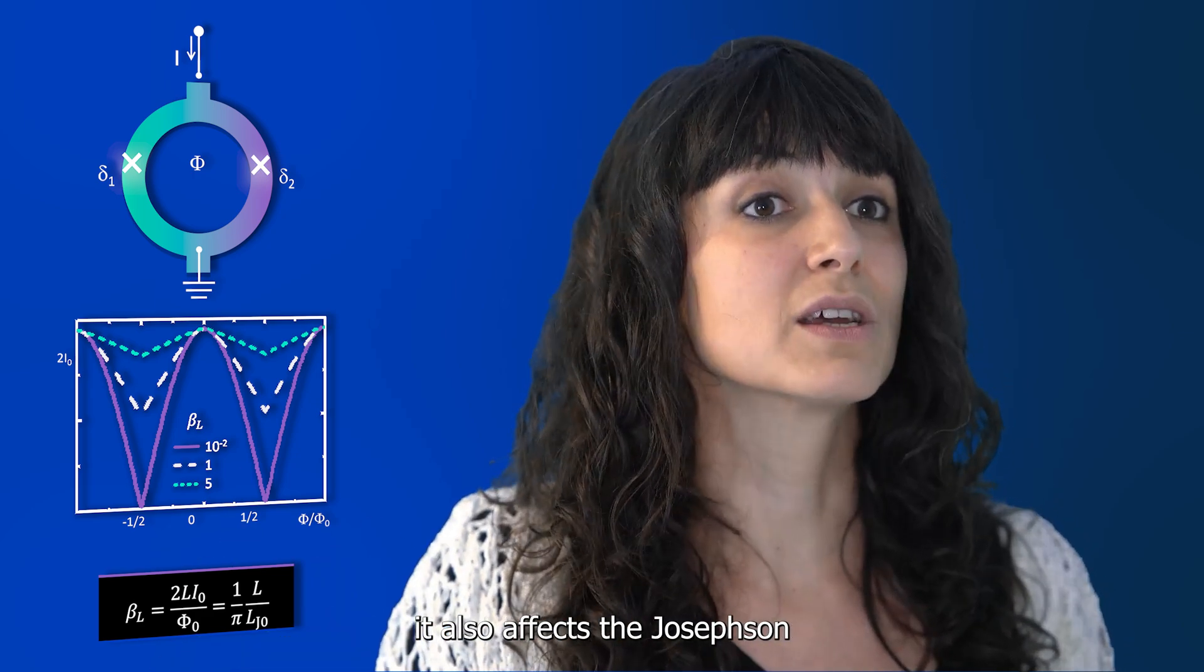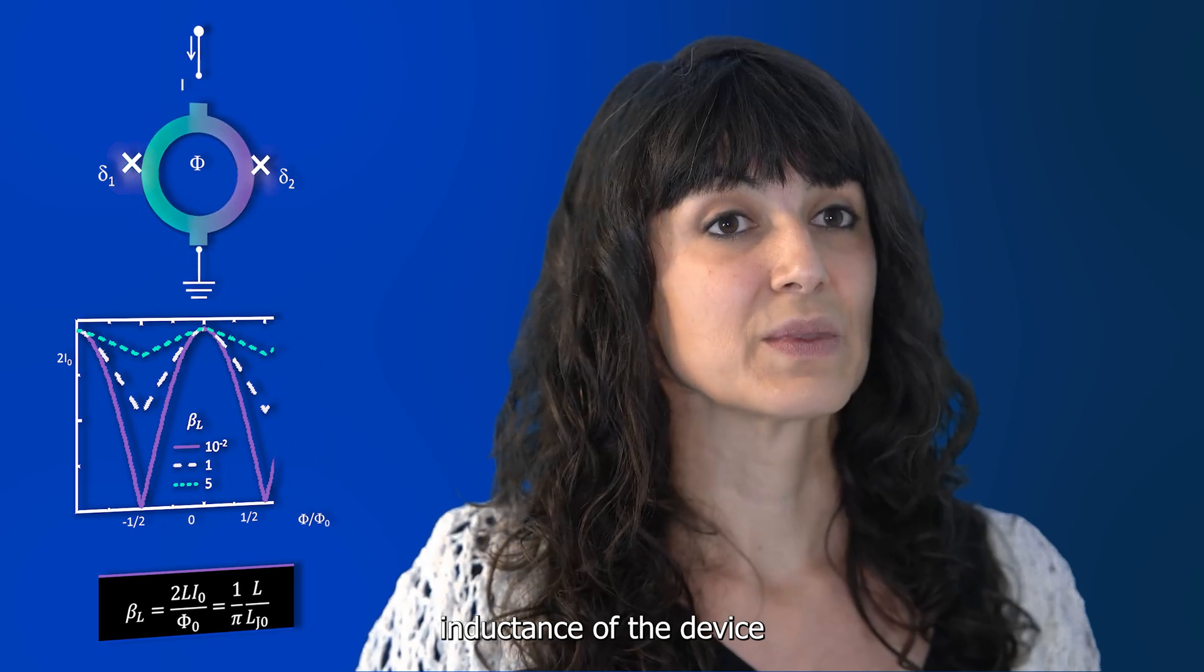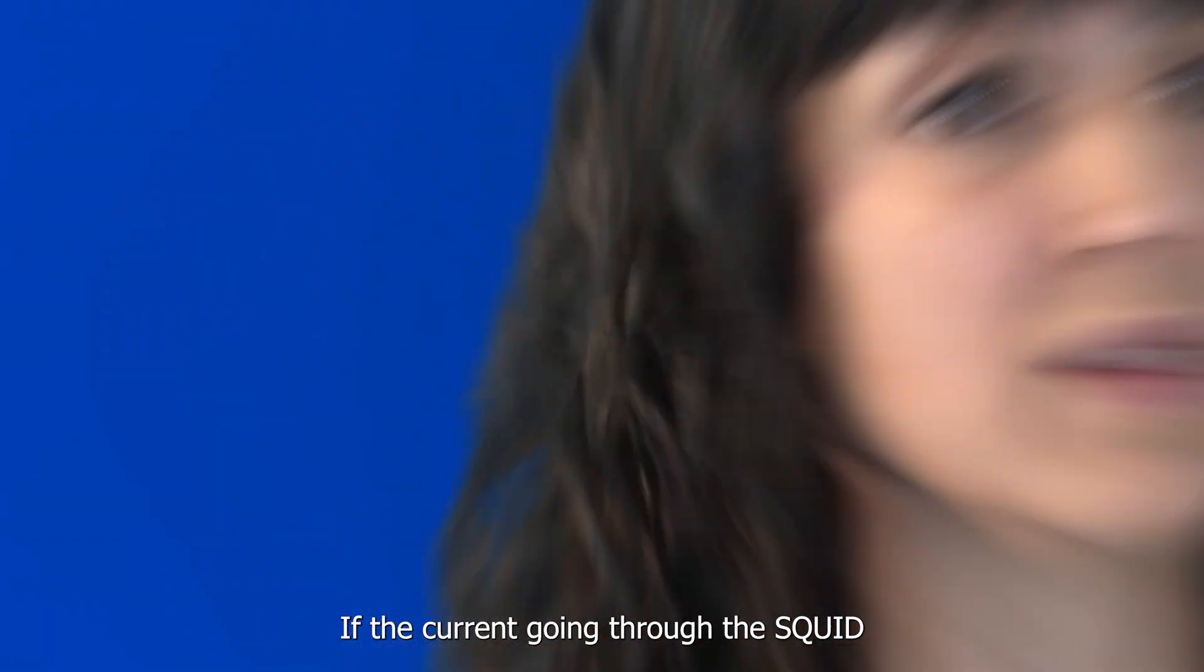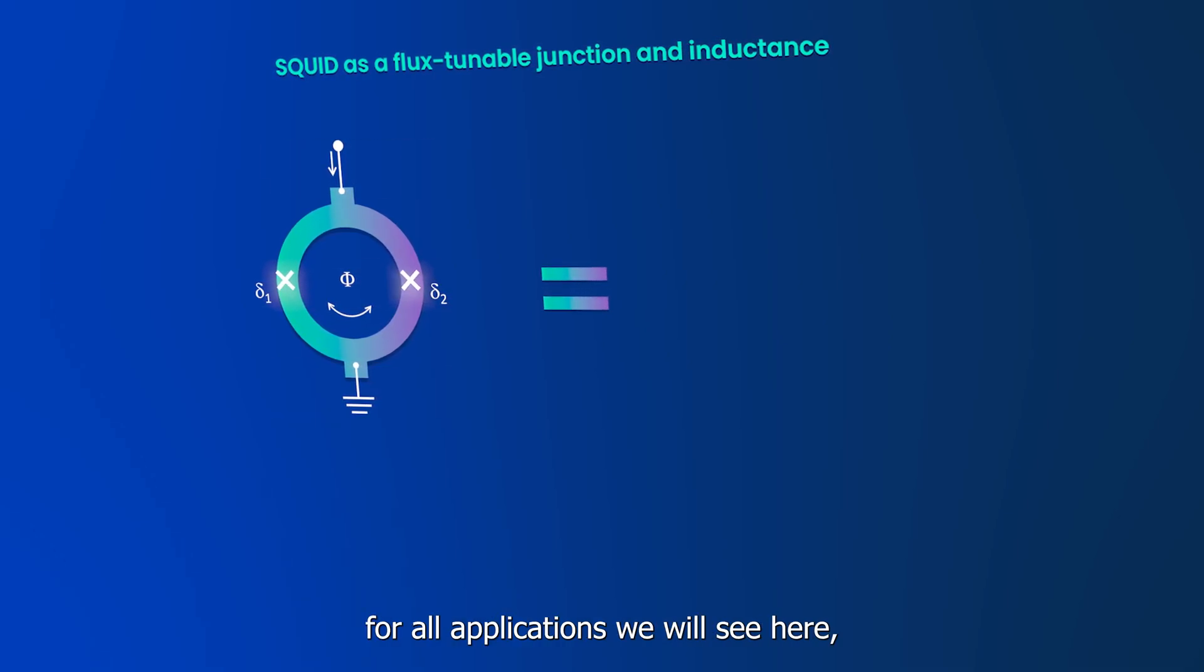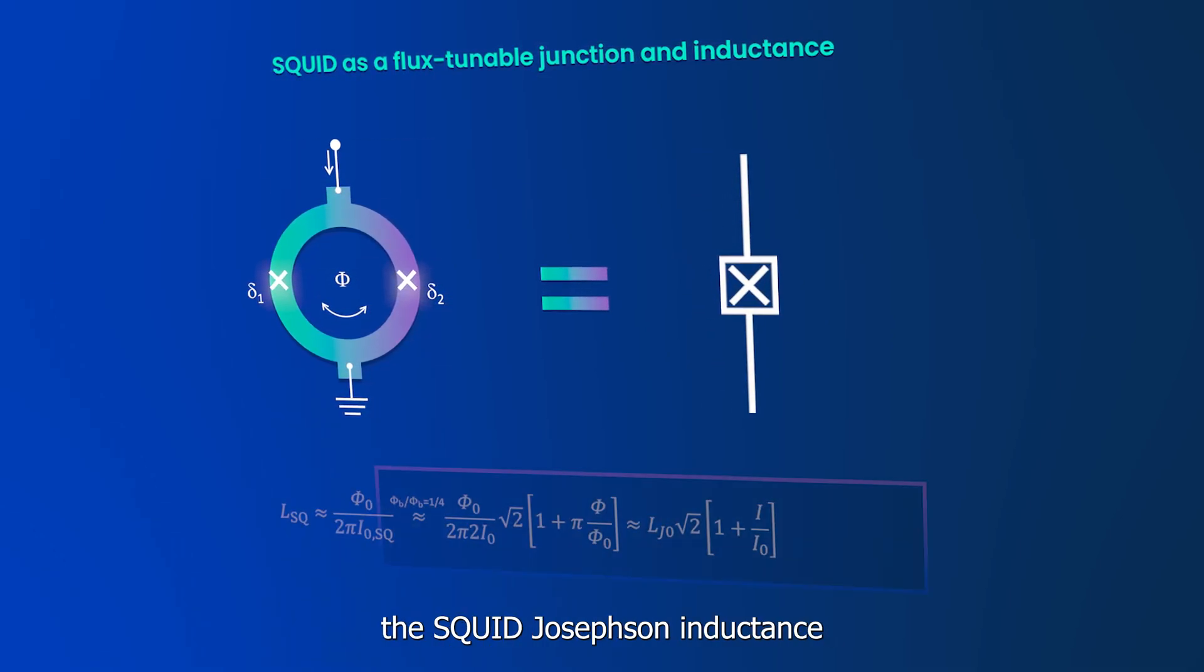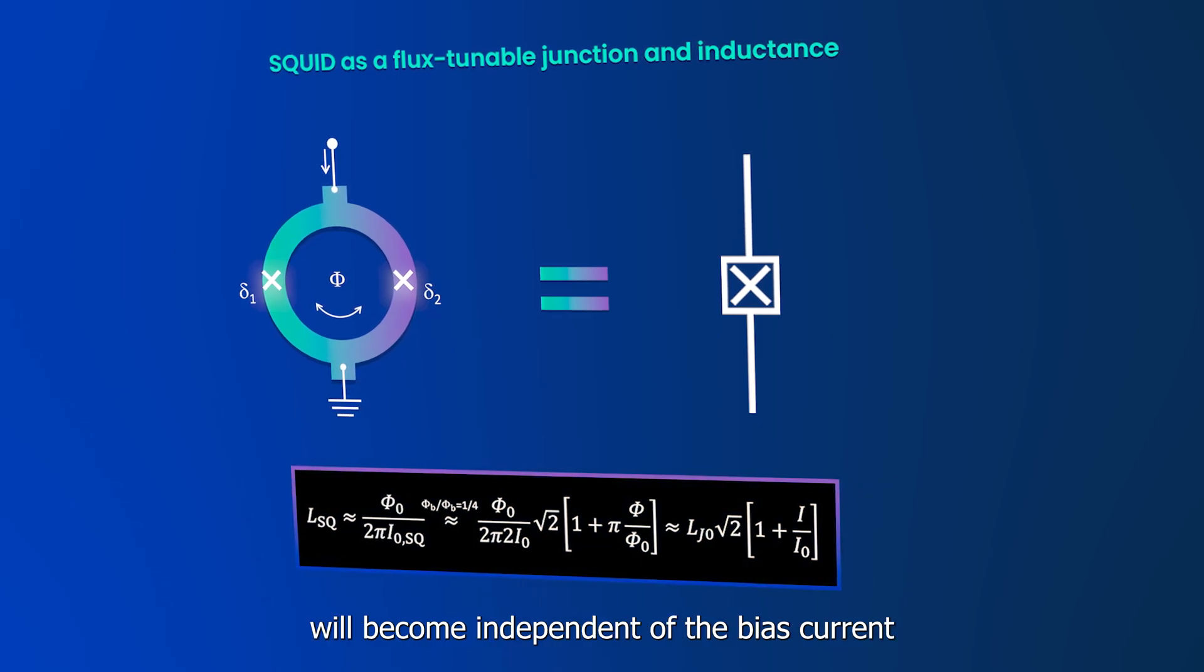It also affects the Josephson inductance of the device. If the current going through the SQUID is much smaller than its critical current, which is a good approximation for all applications we will see here, the SQUID Josephson inductance will become independent of the bias current.